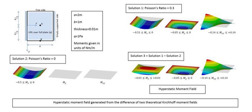Typically, the starting point for stress analysis is a geometrical description of the structure, the properties of the materials used for its parts, how the parts are joined, and the maximum or typical forces that are expected to be applied to the structure. The output data is typically a quantitative description of how the applied forces spread throughout the structure, resulting in stresses, strains and the deflections of the entire structure and each component.